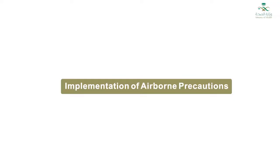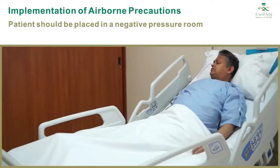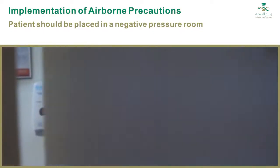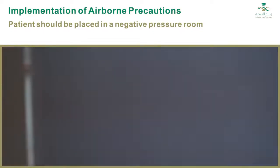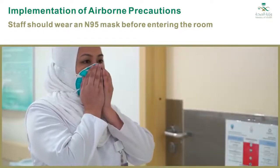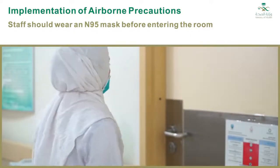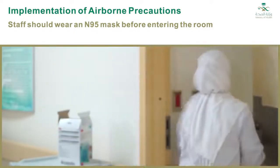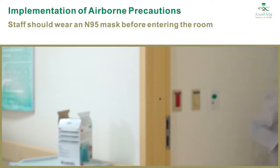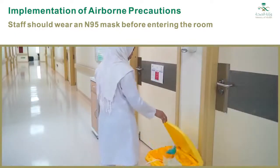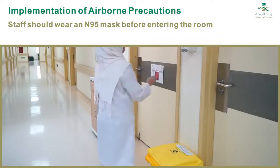Implementation of airborne precautions: Patients with a suspected or confirmed airborne infectious disease should be isolated in a negative pressure room. Pressure differentials should be monitored daily when the room is in use. Healthcare workers should wear an appropriately fit-tested N95 respirator upon entering the room. The respirator should be removed outside the patient room after use, followed by hand hygiene.